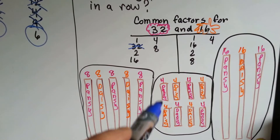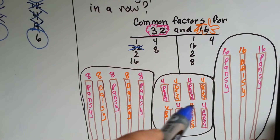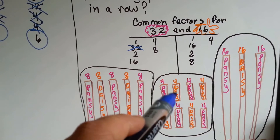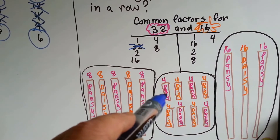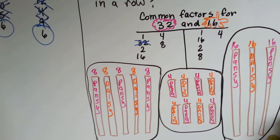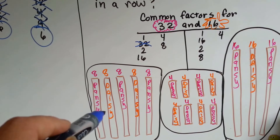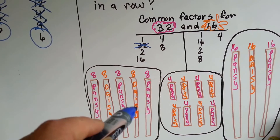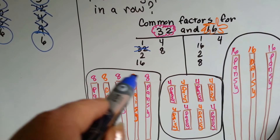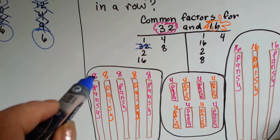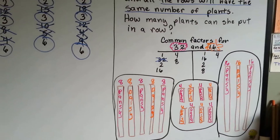She could also do 8 rows of 4 flowers each — 4 pansies, 4 daisies, 4 pansies, 4 daisies — they won't be mixed and all rows have the same number. Or what if she did 5 rows of 8? Pansies, then daisies, then pansies, then daisies, then pansies — she'd have all 40 with 8 flowers in each row, not mixed. So she's got 3 different choices.